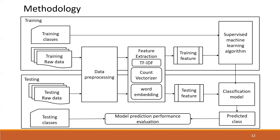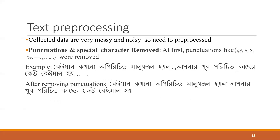This is the methodology. First, we collected the dataset and applied preprocessing techniques like stemming, stopword removal, and tokenization. After that, we applied feature extraction techniques — TF-IDF, count vectorization, and word embedding — then identified training and testing features, applied supervised machine learning techniques, built classification models, predicted classes, and evaluated and compared the performance of different machine learning algorithms.